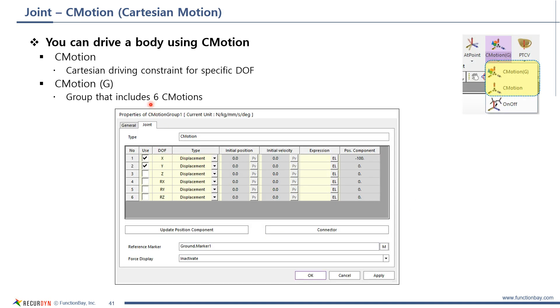You can use C motion to apply motion to a body directly. C motion G is a special group to apply six motion errors, like this. I recommend you to use C motion G instead of C motion.